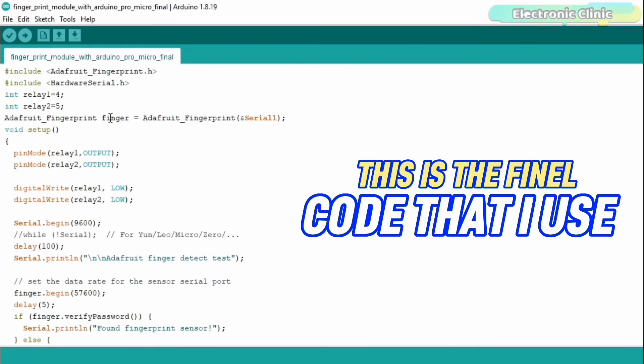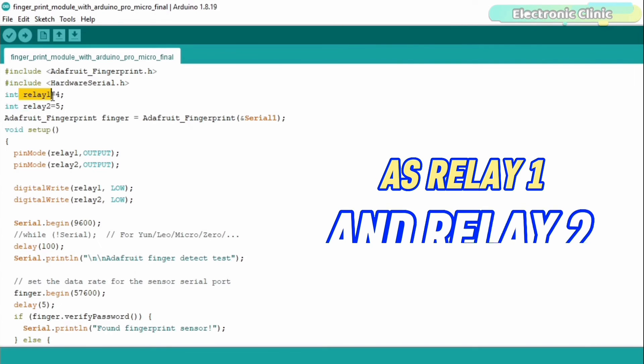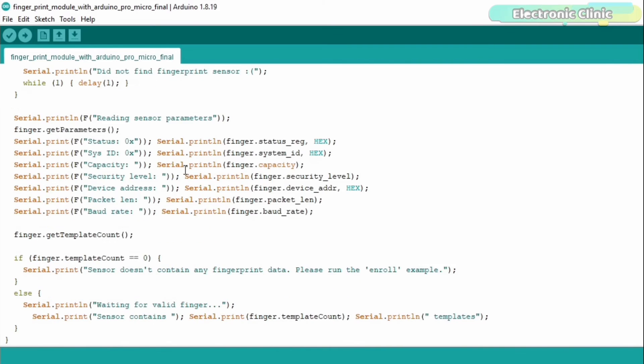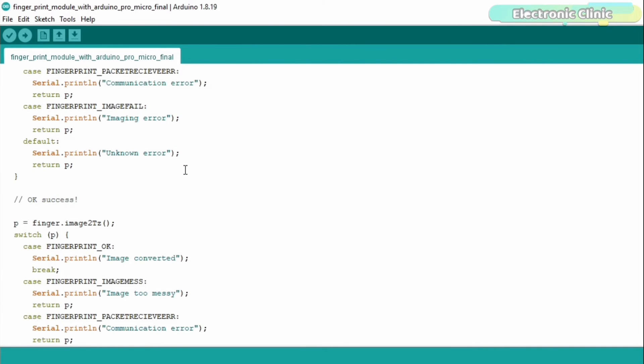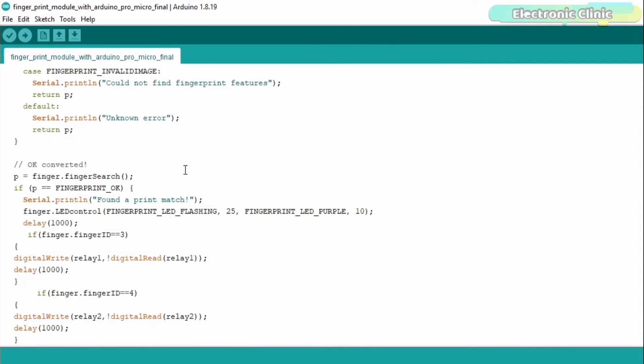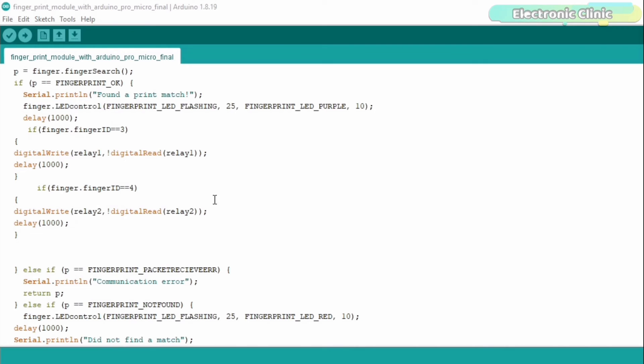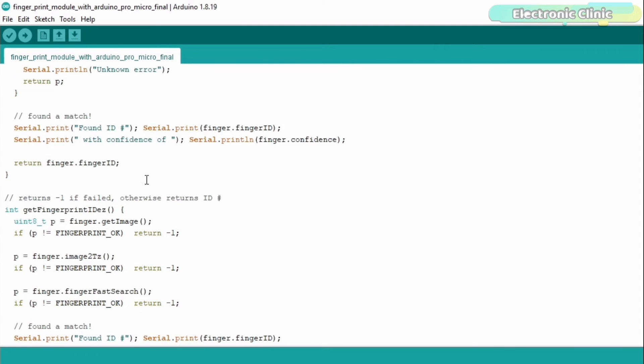This is the final code that I used to control the two LEDs. You can see I have named the two LEDs as Relay 1 and Relay 2. This is the same exact code from my previous R557 fingerprint module based projects. The only difference is that this time I'm using the Arduino Pro Micro and instead of controlling the door lock, I'm simply controlling the two LEDs. You can see I'm using the finger IDs 3 and 4. 3 is the ID of my index finger and 4 is the ID of my middle finger. You can download this code from my website electronicclinic.com. I will add a link in the description.